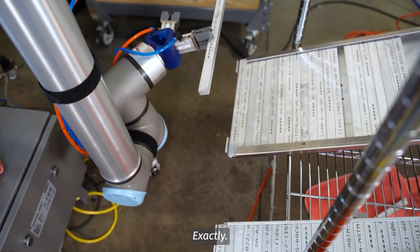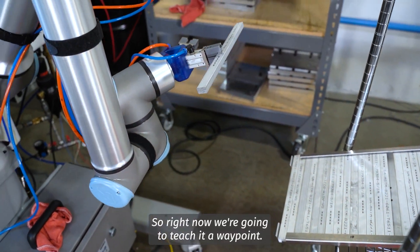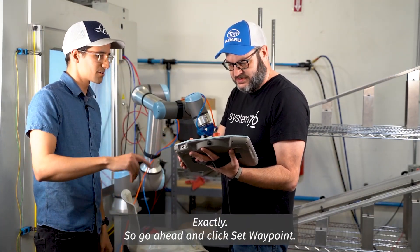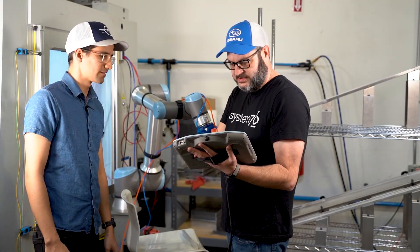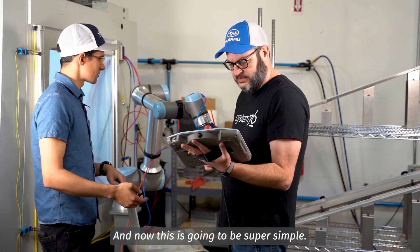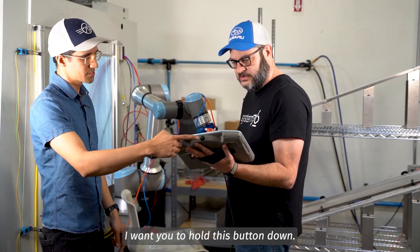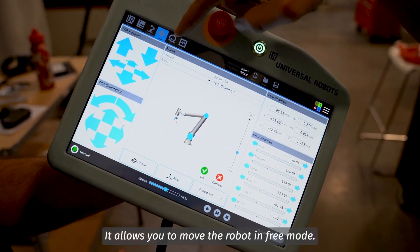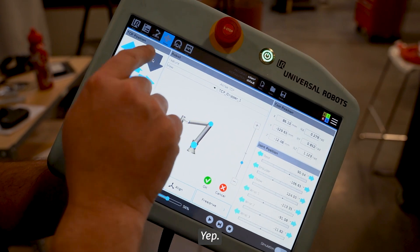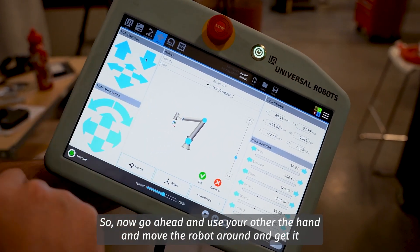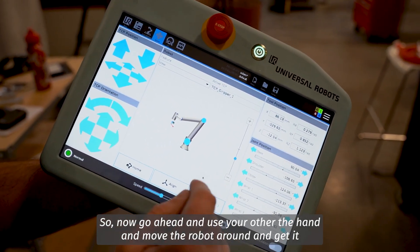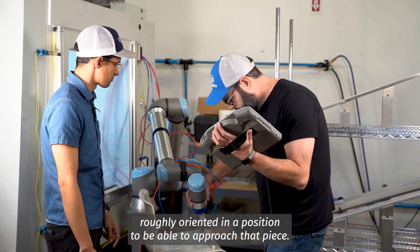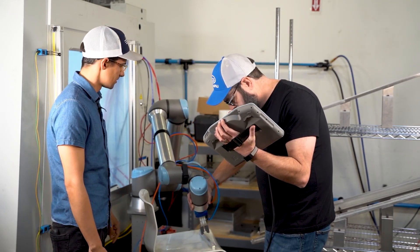So right now we're going to teach it a waypoint. Okay, so that's just the destination? Exactly. So go ahead and click set waypoint. And now this is going to be super simple. I want you to hold this button down. That's what UR calls the free drive button. It allows you to move the robot in free mode. Okay, so now go ahead and use your other hand to move the robot around and get it roughly oriented in a position to be able to approach that piece. Perfect, so that'll be good. You just need it rough.